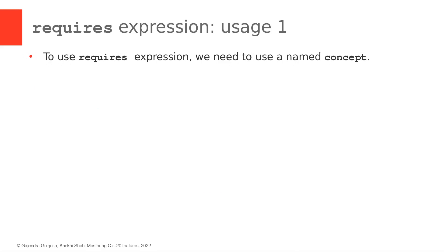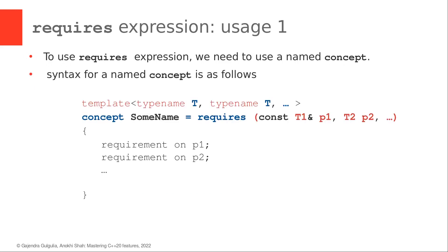The syntax for a named concept is as follows: the template type token for each of the template parameters, just like in the case of a generic function, followed by the keyword concept, the name of the concept — in this case, some name — followed by an equals sign, and then the requires expression. The syntax for the requires expression we already saw in the previous slide.